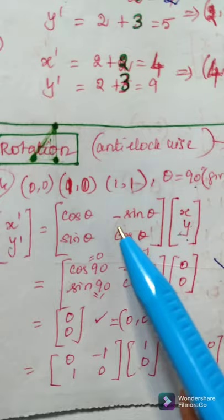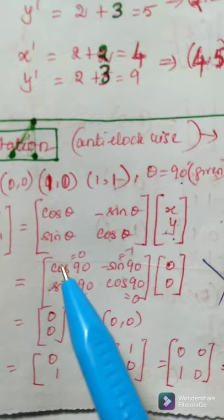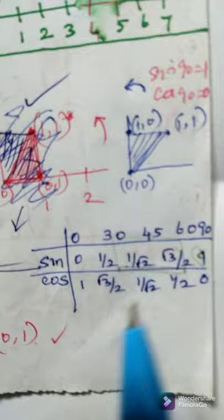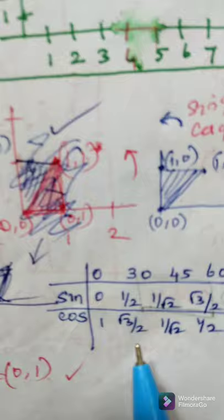Already, we know the value for cos theta is 0, minus sin theta is minus 1, sin theta, sin 90 is 1 and cos 90 is 0. Here, we will see this thing. 0, 30, 45, 60, 90. For sin and cos, this will be the value. 0, 1 by 2, 1 by root 2, root 3 by 2 and 1. For cos, 1, root 3 by 2, 1 by 2, 1 by root 2, 1 by 2 and 0. From these values, we are getting and applying here.